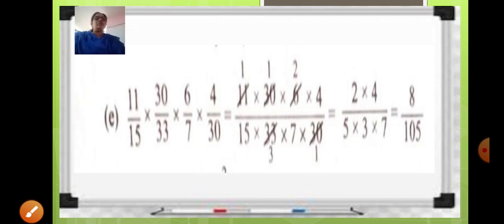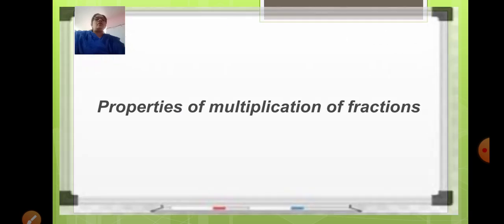Just solve it and you can check the answer with this slide. Multiply the numerators together, cancel the common factor — that is whichever is divisible — just cancel it, and then multiply the numerators separately and the denominators together and write the fraction.